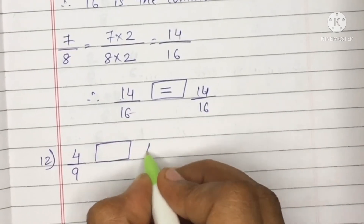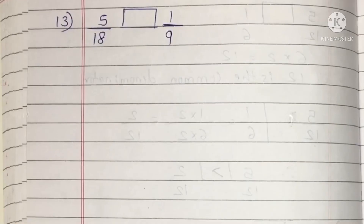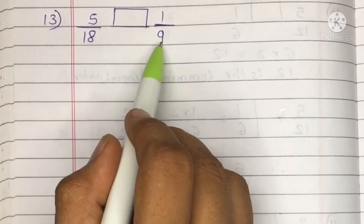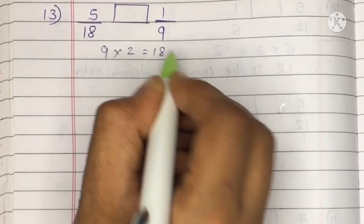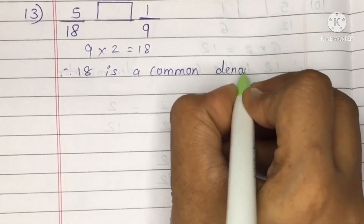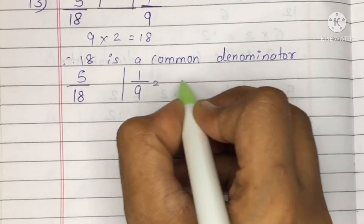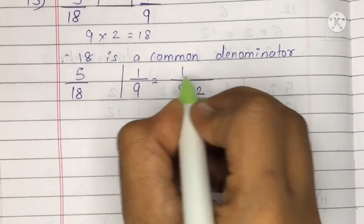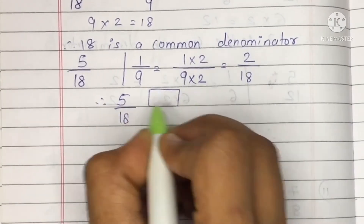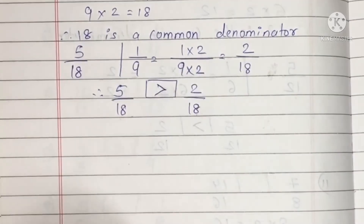Question 12: 4 upon 9 and 4 upon 9 — both numbers are the same, so equal to sign. Question 13: 5 upon 18 and 1 upon 9. 18 appears in the table of 9 — 9 twos are 18. Take 18 as common denominator. Multiply 1 upon 9 by 2: 1 two is 2, 9 twos are 18. Now 5 upon 18 vs 2 upon 18 — 5 is greater than 2.